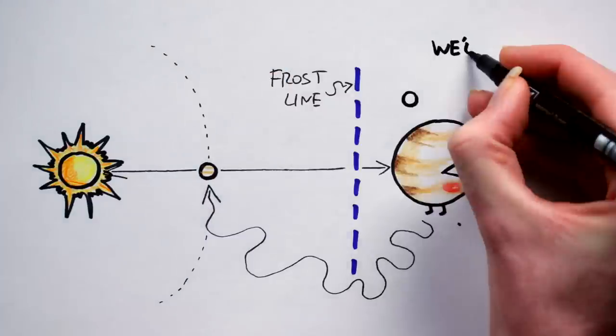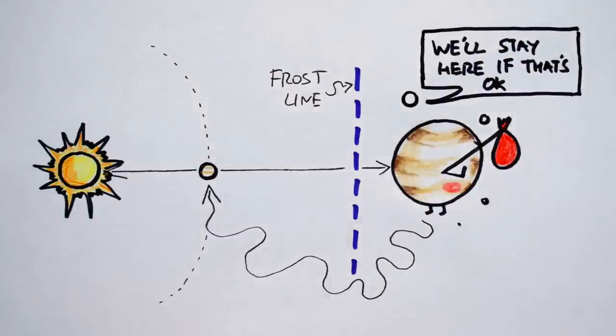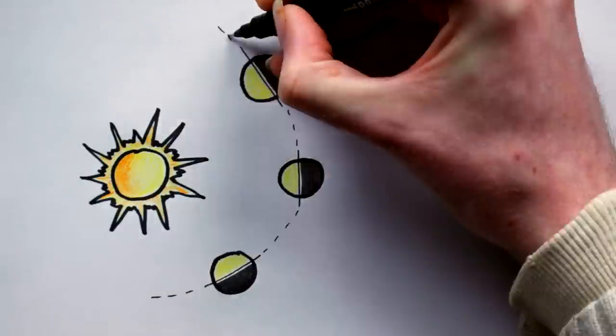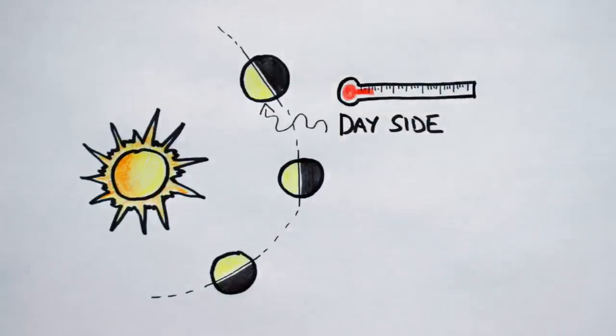As a result they are unlikely to have moons and will certainly be tidally locked. Tidally locked planets always present the same face to their parent star, so they have a permanent day side and a permanent night side.